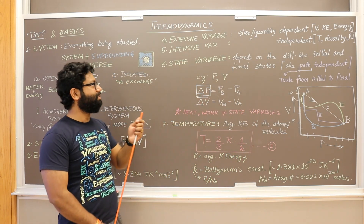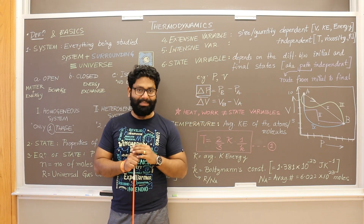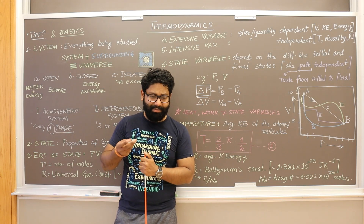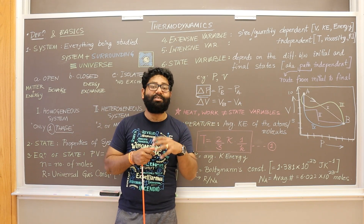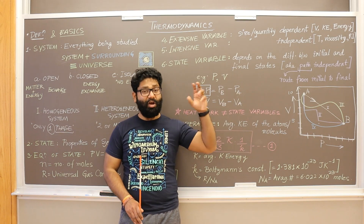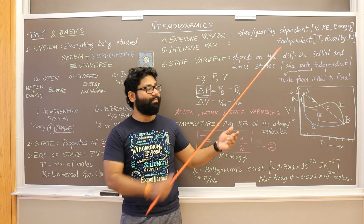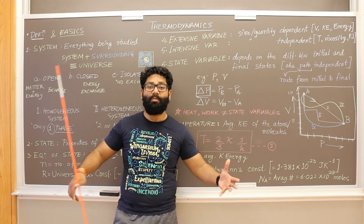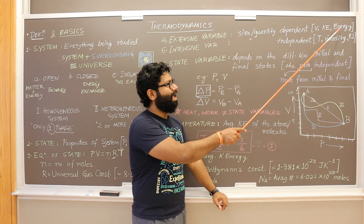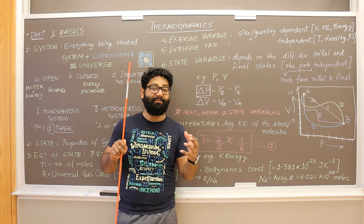Moving on, we have different kinds of variables. Any variable that depends on the size or quantity of the whole system — the quantity of matter in it — is called an extensive variable. For example, the mass of the system or the volume of the system, which depends on how much matter we have inside. Kinetic energy is also extensive, because the more molecules you have, the more kinetic energy the system has.